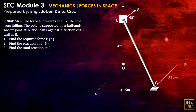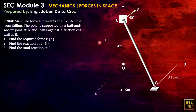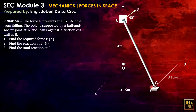Situation 1: The force P prevents the 375N pole from falling. The pole is supported by a ball and socket joint at A and leans against a frictionless wall at B. The required problems are: find the required force P, find the reaction at B, and find the total reaction at A.